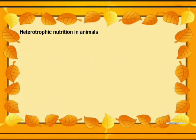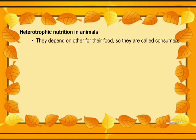The first topic is heterotrophic nutrition in animals. In heterotrophic nutrition, animals do not prepare their own food, so they depend on others for food. They are commonly called consumers.